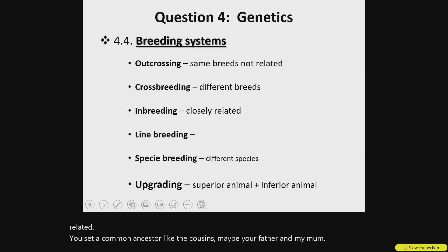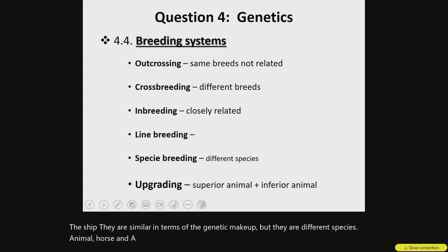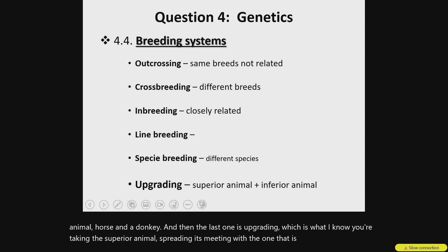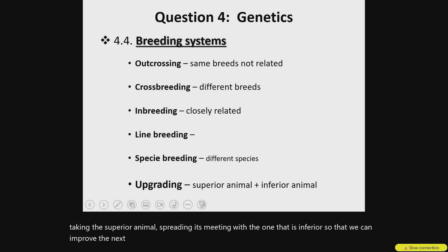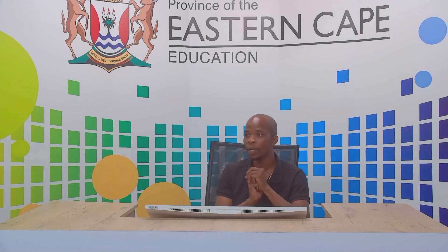Species-breeding is not just different breeds but different species altogether — they are similar, like a goat and a sheep, or a horse and a donkey, similar in genetic makeup but different species. The last one is upgrading, whereby we are taking a superior animal and mating it with an inferior one, so that we can improve the next generation. Those were some of the difficult sub-questions highlighted from our trial exam Paper 2. Next time we're going to do other sub-sections as well. Thank you.